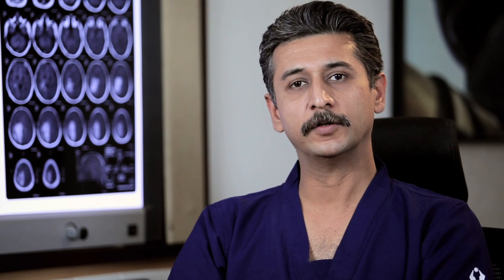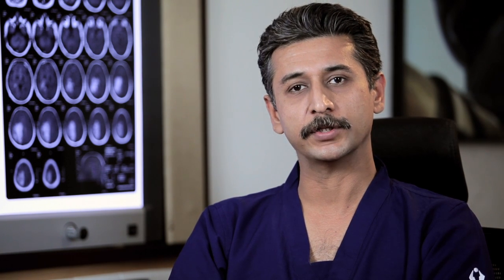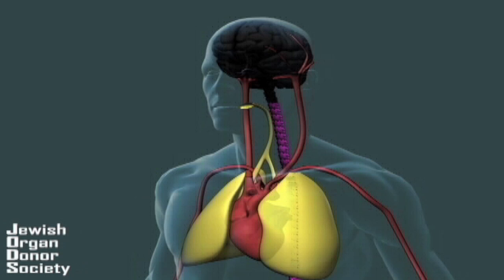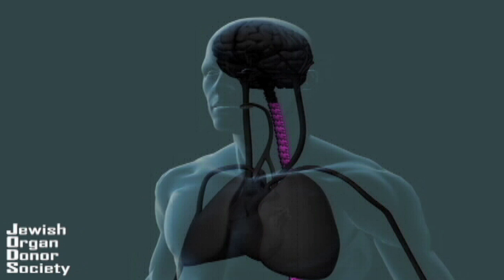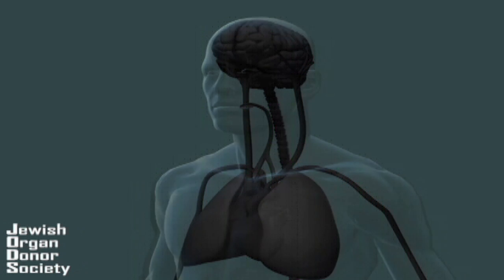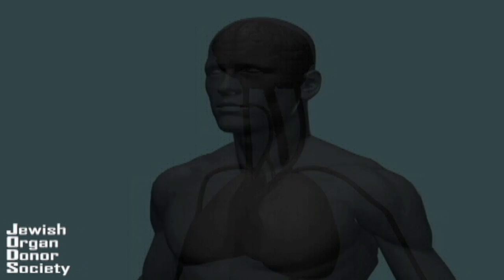The brainstem is the central nervous system of the human body and the center of consciousness. If the brainstem dies, respiration would stop. Once the heart stops receiving oxygen, it too would die and stop beating, and all other organs will also die due to oxygen deprivation.